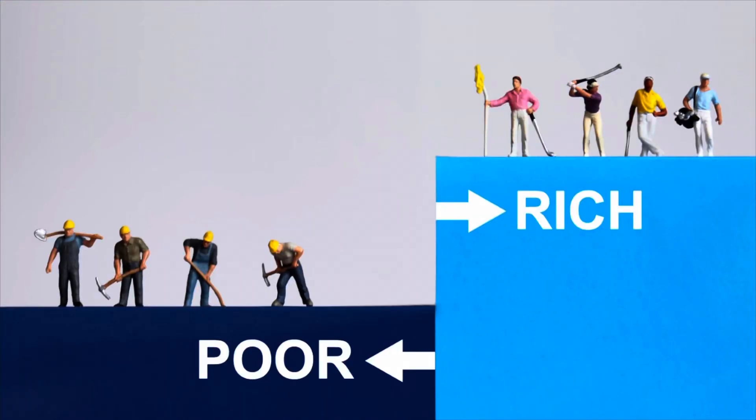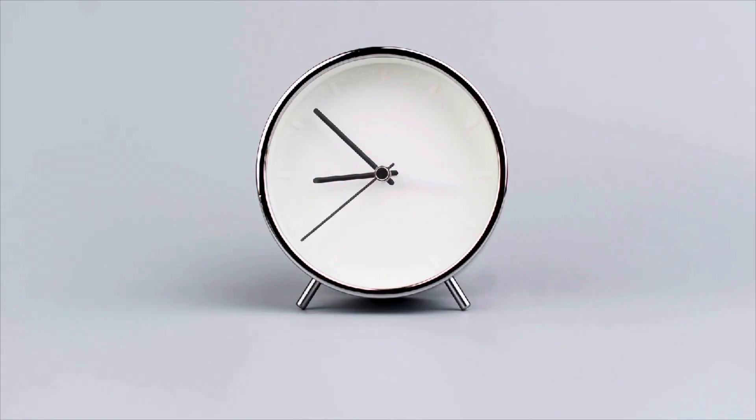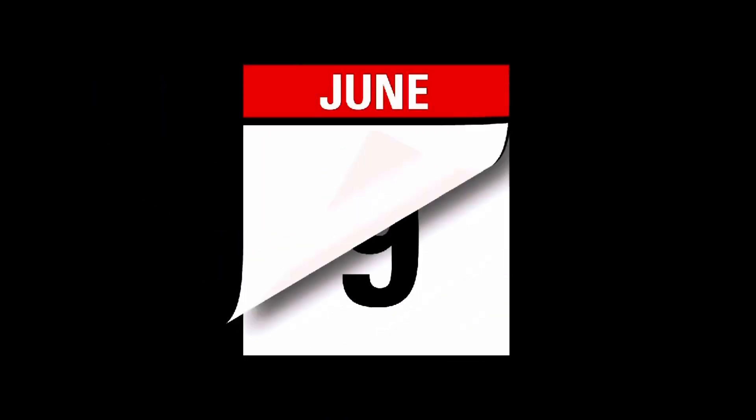If there's one thing that we all have in equal proportion, whether you are rich or poor or middle class, it's time. We all have 24 hours in a day, and how you start your day will affect how your day ends, and how your day ends will ultimately affect how your week ends, and how your week ends will affect how your month and your entire year ends. This transparent cap represents our time, our 24 hours.